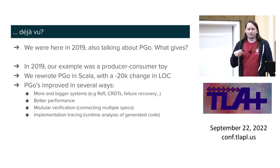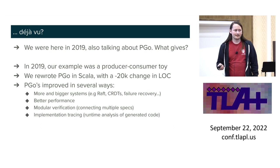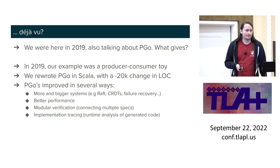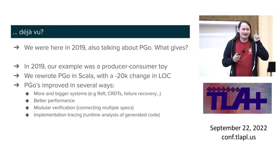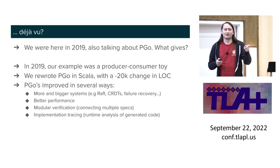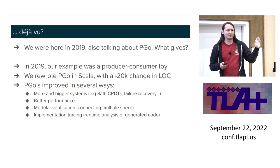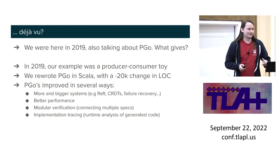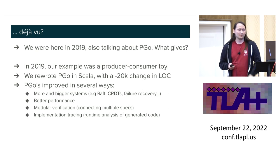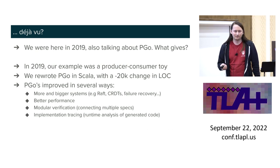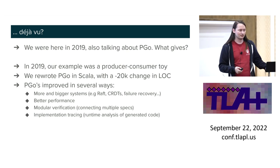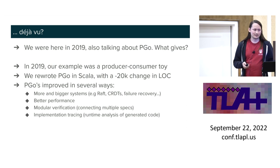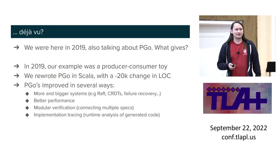In 2019, our example was kind of a producer-consumer toy program. Since then, a lot has changed. For one, we rewrote PGO at least once into Scala — it was originally in Java. Minus 20,000 lines of code; I'm a little bit proud of that. More importantly: we have more and bigger systems. We've got an implementation of Raft, we have CRDTs. Previously we couldn't deal with failure recovery very well — now we have an actual solution for that. Our performance is better, and we have two experimental things to share.